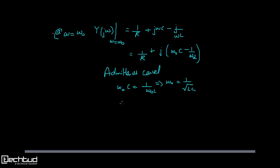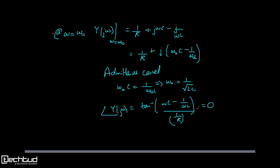Substituting back, the phase of Y(jω) is tan⁻¹ of (ωC − 1/ωL) divided by (1/R), and since ωC and 1/ωL cancel each other, the phase is 0. The magnitude of Y(jω) is simply 1/R. So at resonance, voltage and current are in phase.